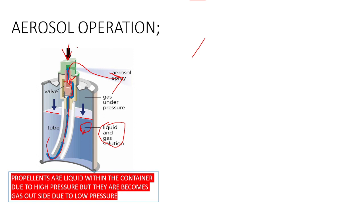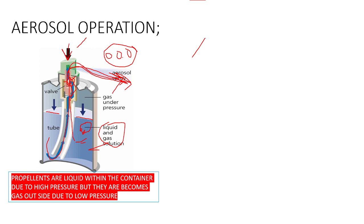When we press the actuator, the seal opens and the aerosol product comes outside because it moves from the high pressure region inside the container to the low pressure region outside. The propellants then transition from liquid phase to gaseous phase, and the distance between propellant particles increases.